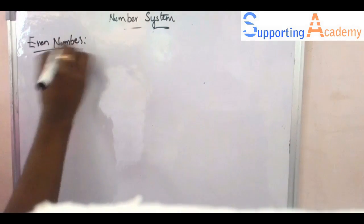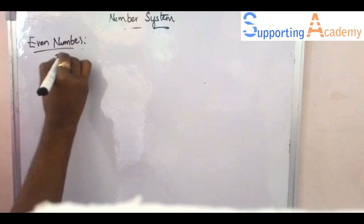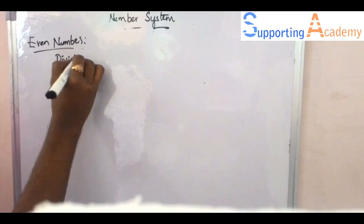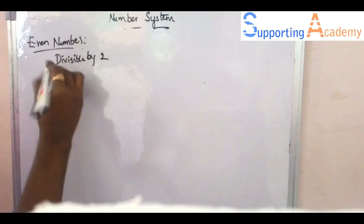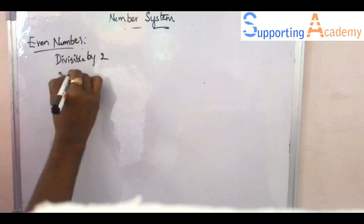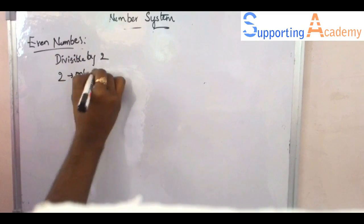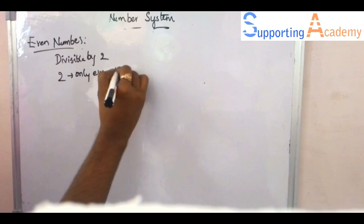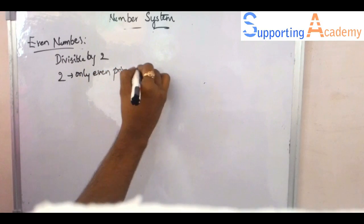Even numbers are the numbers which are divisible by 2. If I have to tell it in other words, it can be explained as the numbers ending with 0, 2, 4, 6, 8. These are called even numbers. They are divisible by 2.